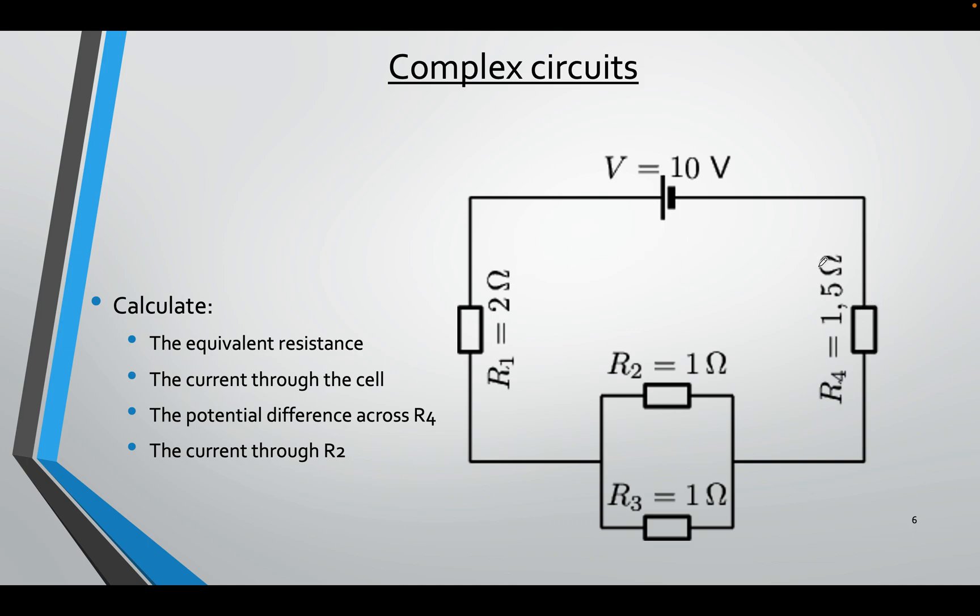So that's 2 plus 1.5 plus this. This one, I can use my formula 1 over 1 plus 1 over 1 to the power of minus 1. Or you can remember that if both resistors in parallel are the same, the total is always a half. It's always half. So this is 1 and 1, the total will be 0.5 ohms.